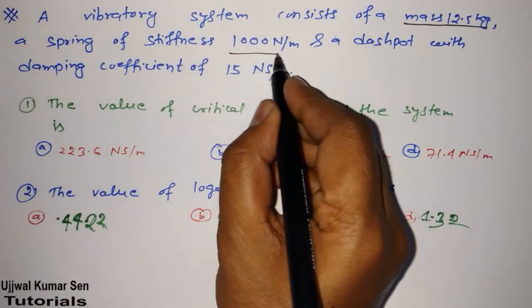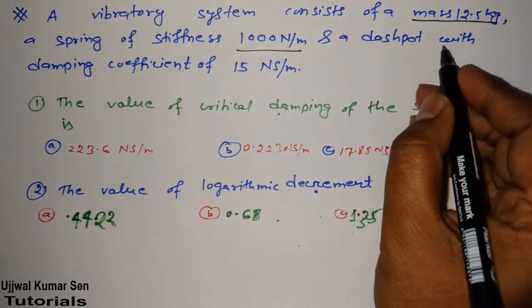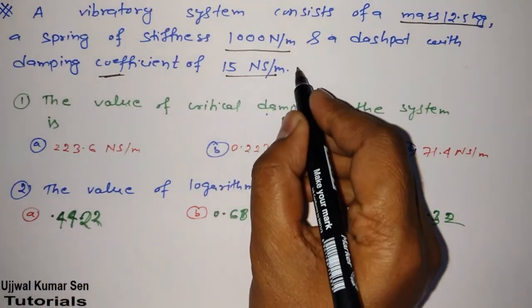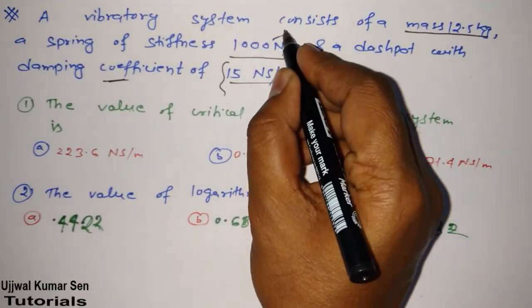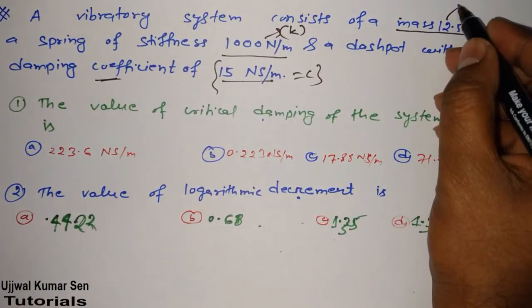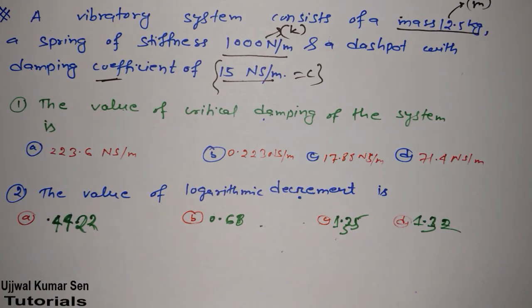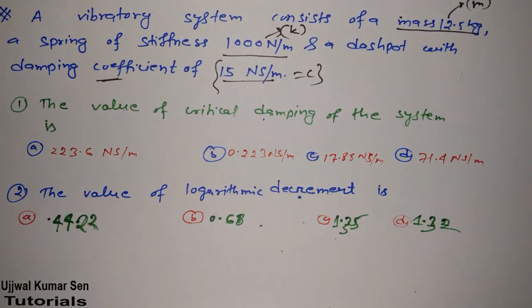Now, in this question, what we have given? A vibratory system consists of a mass of 12.5 kg. A spring stiffness is 1000 N per meter. A dashpot with a damping coefficient is 15 N·s/m. So this is known as C, this is K, and this is M. We have given C, we have given K, we have given M, okay?